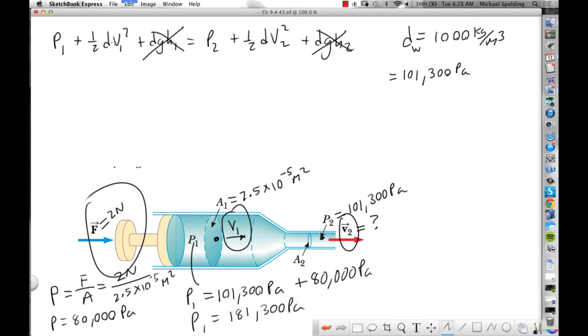So what can we do to V1? V1 is so small, we can set it equal to zero. Just cross V1 to zero.